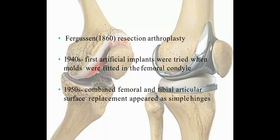Regarding the history of TKR, it started as far back as 1816. Resection arthroplasty was first done in the 1860s. In the 1940s, the first artificial implants were tried when molds were fitted in the femoral condyle. In the 1950s, combined femoral and tibial articular surface replacement appeared as simple hinges.